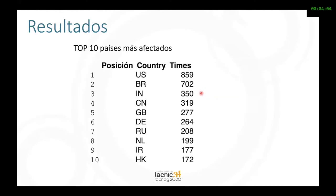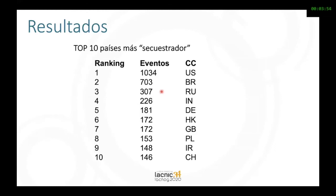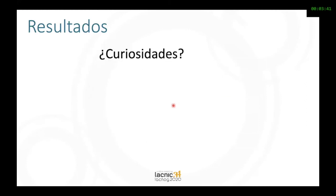The top 10 countries most affected: the United States and Brazil in our region. The order is: the United States, Brazil, India, China, Great Britain, Germany, and so on. And the top 10 hijacking countries: the United States with 1,034 events, Brazil, Russia, India, etc.